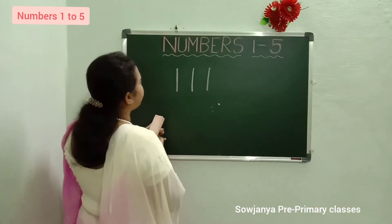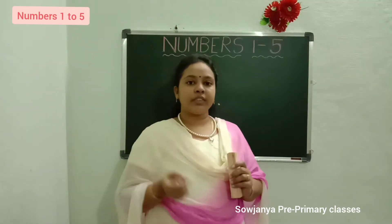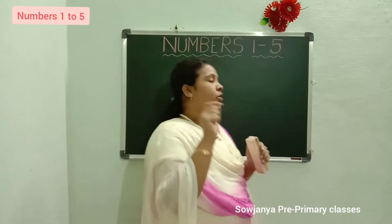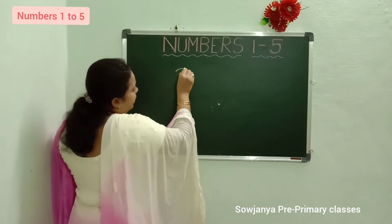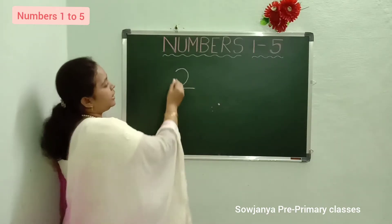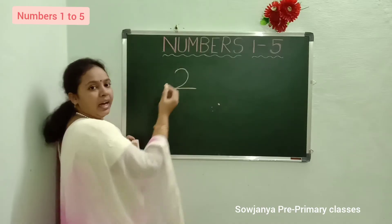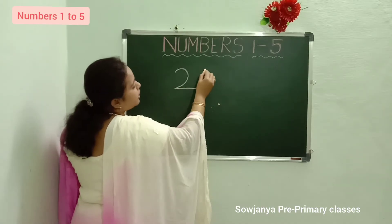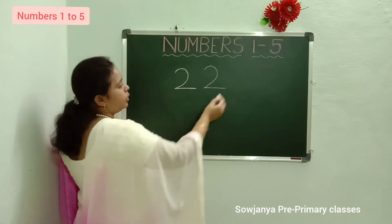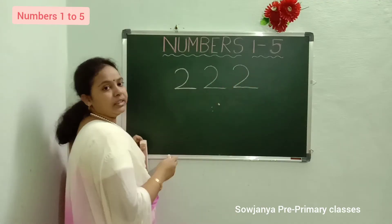What is the next number children? What is the next number? 1 after 2. 2. What is the next number? 2. How to write 2? Left curve, sleeping line. See? Left curve, sleeping line. How to write 2? Left curve, sleeping line. 2. Left curve, sleeping line. 2.